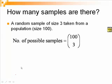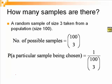And if all these samples have equal chance of being picked, then the probability of a particular sample being chosen will be 1 out of 100 choose 3.